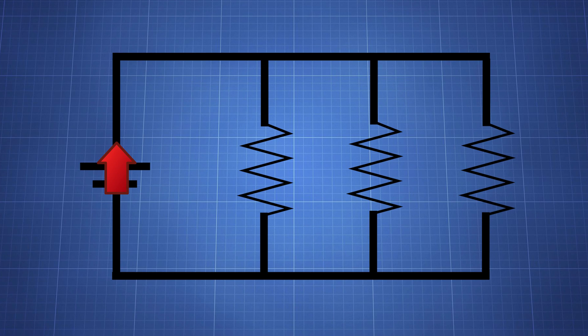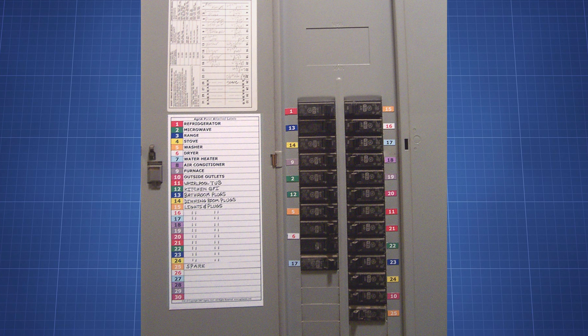Parallel circuits solve this problem. They involve multiple loops. Because there are multiple loops, the current can continue to travel. This is what the modern house uses. Your circuit breaker is connected to dozens of parallel loops.